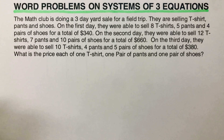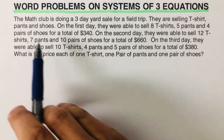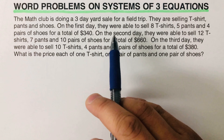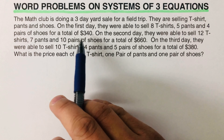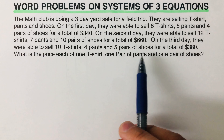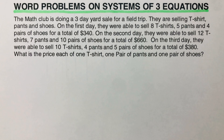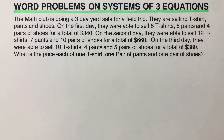Hello everyone. In this video we will be solving word problems on systems of three equations. The math club is doing a three-day yard sale for a field trip. They are selling t-shirts, pants, and shoes. On the first day they sold eight t-shirts, five pants, and four pairs of shoes for a total of $340. On the second day, 12 t-shirts, seven pants, and 10 pairs of shoes for $660. On the third day, 10 t-shirts, four pants, and five pairs of shoes for $380.